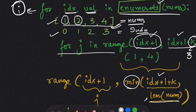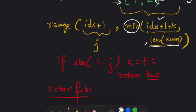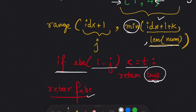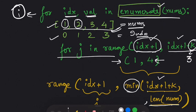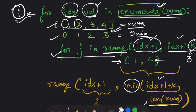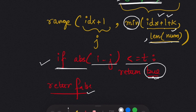Using this logic, for example 1 the range for j starts from 1 and the maximum range is 4. After comparing the values at i and j, we check if the absolute difference is less than or equal to t. If true, we return true; otherwise, at the end we return false.